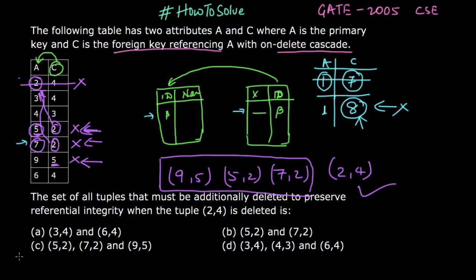So the answer would be C. We have to delete (5, 2), (7, 2), and (9, 5). This was very simple.